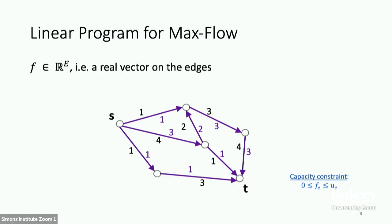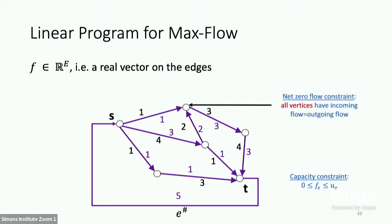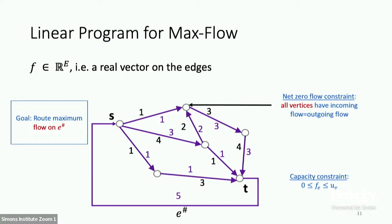To express the flow constraints compactly, I'll modify the graph by sending an edge from the sink back to the source. On this special edge E-sharp, I send five units of flow — the same as the total flow from source to sink. Now what does it mean to be a flow? It means that at every single vertex, the net flow is exactly zero: inflow equals outflow.